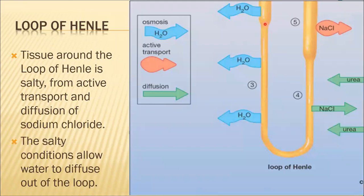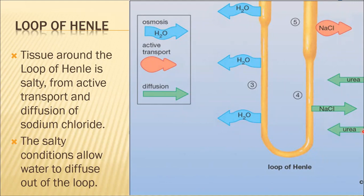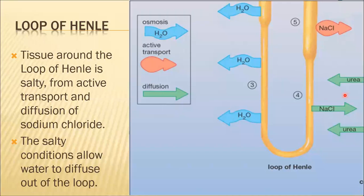After the proximal tubule, the next part is the loop of Henle. In this area, the salt concentration in the surrounding tissue is kept high, especially here. This is why the concentration is more, due to active transport through the surrounding area, allowing water to follow. The sodium chloride and water component creates a concentration effect, so urine becomes concentrated in the loop of Henle.